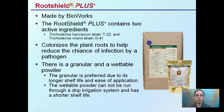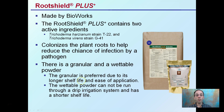There's also a product called Root Shield, or Root Shield Plus, made by BioWorks. It contains two active ingredients — two different strains of Trichoderma — and it colonizes plant roots to help reduce the chance of infection by a pathogen. It comes in a granular and a wettable powder. The granular is preferred due to its longer shelf life and ease of application. The wettable powder cannot be run through drip irrigation systems and has a shorter shelf life, so the granular can be easily mixed into growing media.